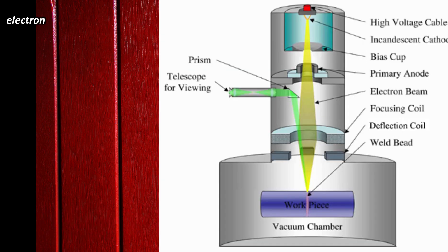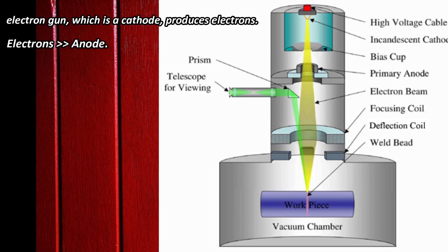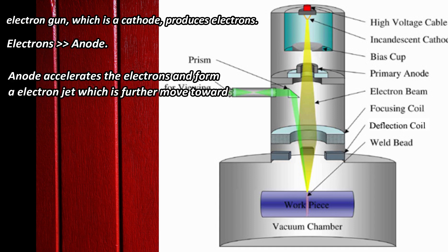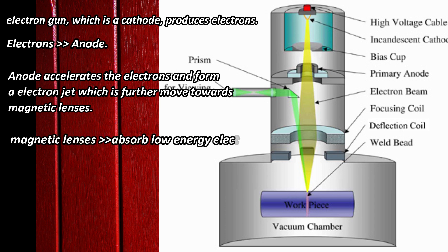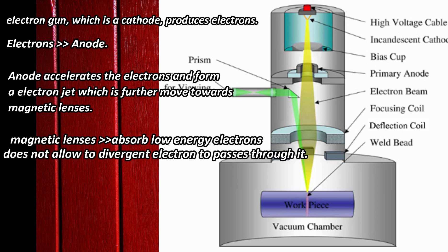First, the electron gun, which is a cathode, produces electrons. These electrons move towards the anode which is positively charged and placed right after the electron gun. The anode accelerates the electrons and forms an electron jet which is further moved towards magnetic lenses. The magnetic lenses are a series of lenses which are used to absorb low energy electrons and do not allow divergent electrons to pass through it. It provides a high intense electron jet.